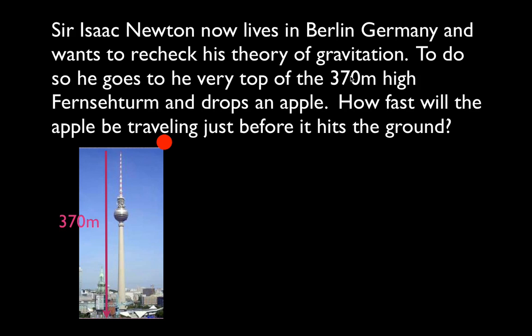The only thing I really know from the problem is that the Fernsehturm is 370 meters high. Here's my apple. It's going to fall straight down, and I like to just draw an XY coordinate system. It makes me think about the vectors and the direction that things are moving, whether I'm going to have positive or negative motion.